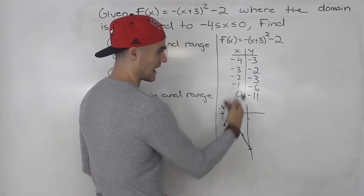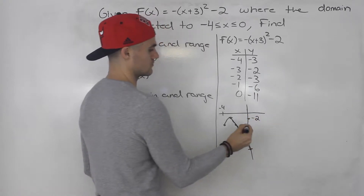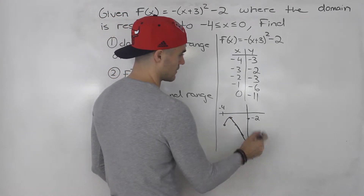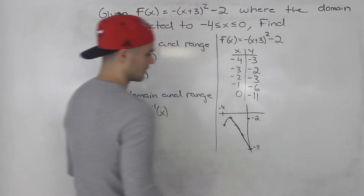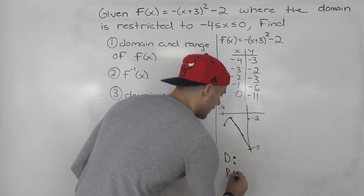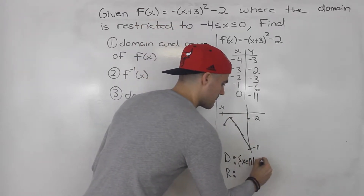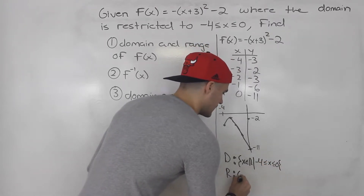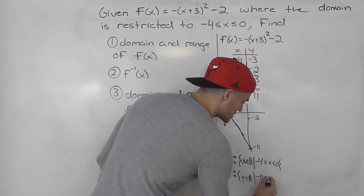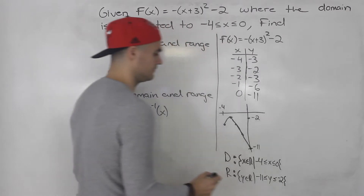Notice that the range is going to go from the highest y value to the lowest y value. The highest y value is going to be negative 2 — basically the y value of the vertex at negative 3, negative 2. The lowest y value is going to be negative 11. So the domain is x ∈ ℝ with x between negative 4 and 0, and the range is y ∈ ℝ with y greater than or equal to negative 11 but less than or equal to negative 2.